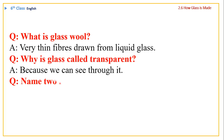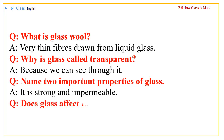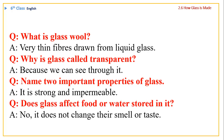What is glass wool? Very thin fibers drawn from liquid glass. Why is glass called transparent? Because we can see through it. Name two important properties of glass. It is strong and impermeable.